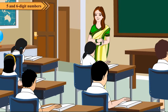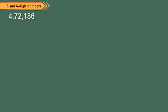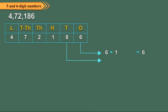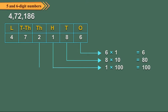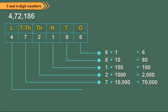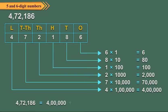When we write a number as the sum of the place values of its digits, it is called the expanded form. Let us write the number 472186 in the expanded form. We first find the place value of each digit. Thus, the expanded form of 472186 is 400000 plus 70000 plus 2000 plus 100 plus 80 plus 6.